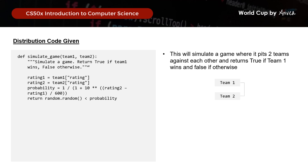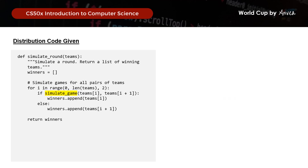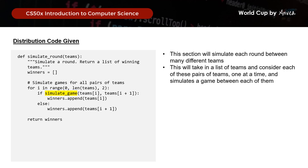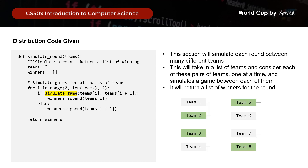Taking one step back, we look at the simulate_round function. This simulates each round between many different teams. So if we have 8 teams, we pair them up and run the simulate_game function for each pair to get the winner. At the end of this function, it returns a list of winners for the round. For example, if you have 8 teams and run this function, you end up with a list of 4 winning teams — say teams 2, 3, 5, and 8.